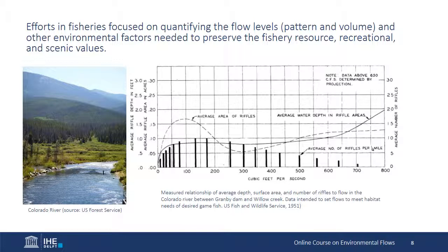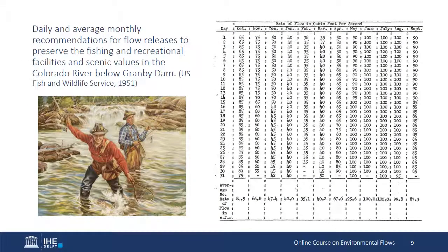In response to these concerns, the U.S. Senate document authorizing construction called for downstream flow releases of a magnitude and timing to maintain a, quote, live stream preserving scenic attractions and fish life. From 1947 to 1949, biologists of the U.S. Fish and Wildlife Service studied the relationships between the quantity and quality of fish habitat with flow levels. They distinguished between pool, riffle, fast deep, and slow shallow habitat types, and considered quality characteristics such as water temperature, oxygen content, food production, available shelter, and conditions favorable or unfavorable to reproduction. The result was a daily schedule of recommended flow releases below Granby Dam to preserve the fishing, recreational facilities, and scenic values of the Colorado River.